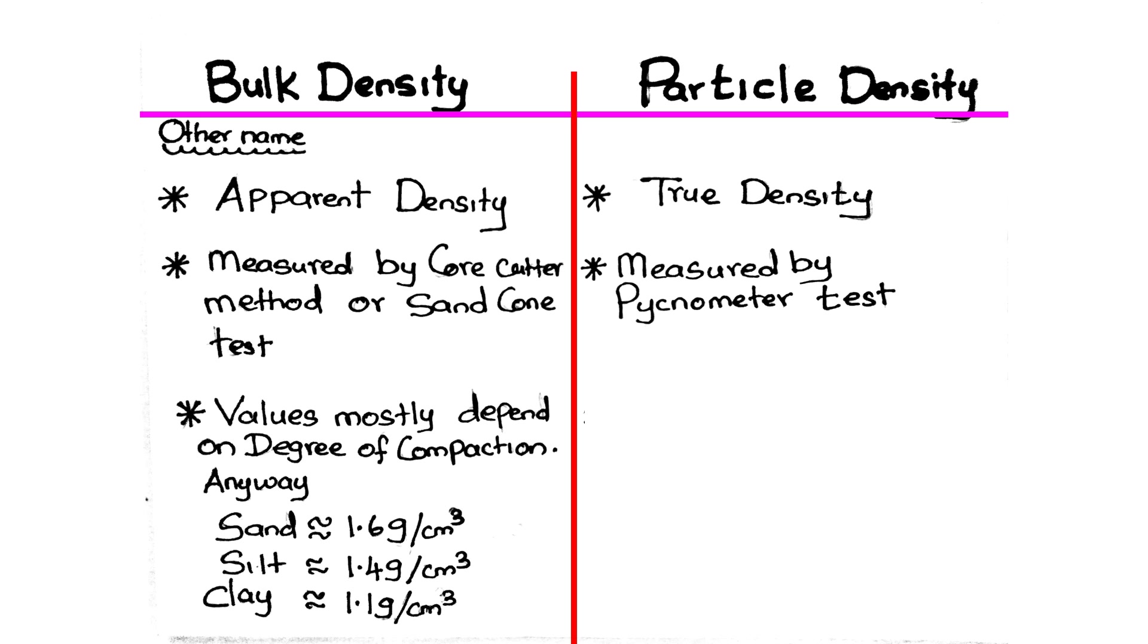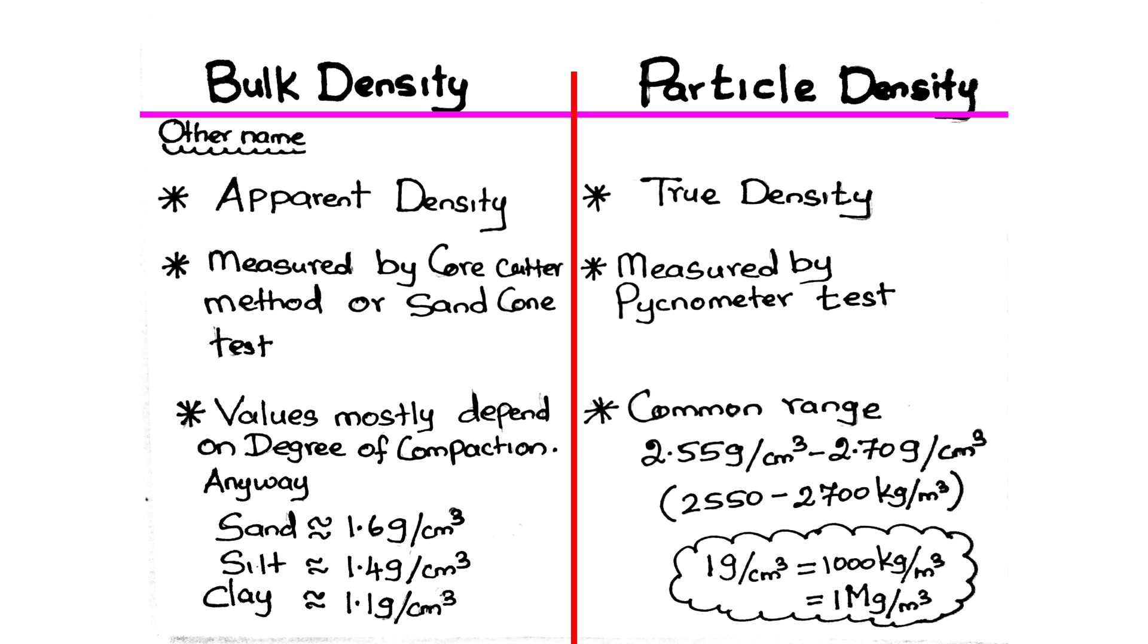Bulk density values mostly depend on degree of compaction. Anyway, bulk density of sand is approximately 1.6 g per cm³. Others are shown in the slide. Common range of particle density is 2.55 g per cm³ to 2.7 g per cm³.